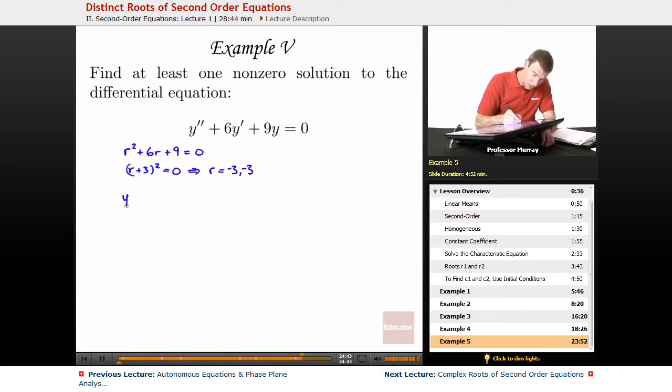So we have a solution here, y is c1e to the negative 3t, but we can't find a second solution because our other root is also negative 3.